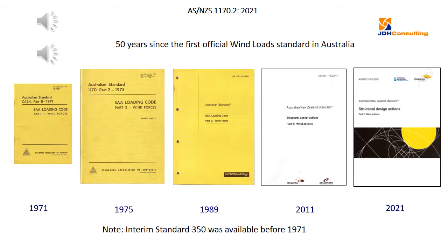This year marks 50 years since the first wind load standard that was published in Australia — CA 34 Part 2, 1971. There have been a lot of different versions in the last 50 years, roughly every 10 or 12 years we tend to have a fairly major revision. The CA 34 Part 2 of 1971 was the first official wind load standard. There was an interim standard 350 that was available for almost 20 years before that.